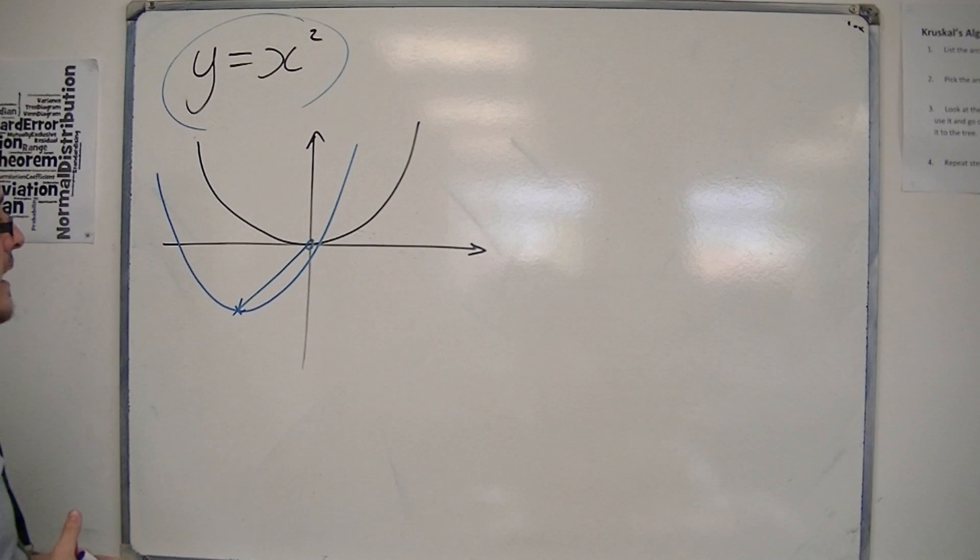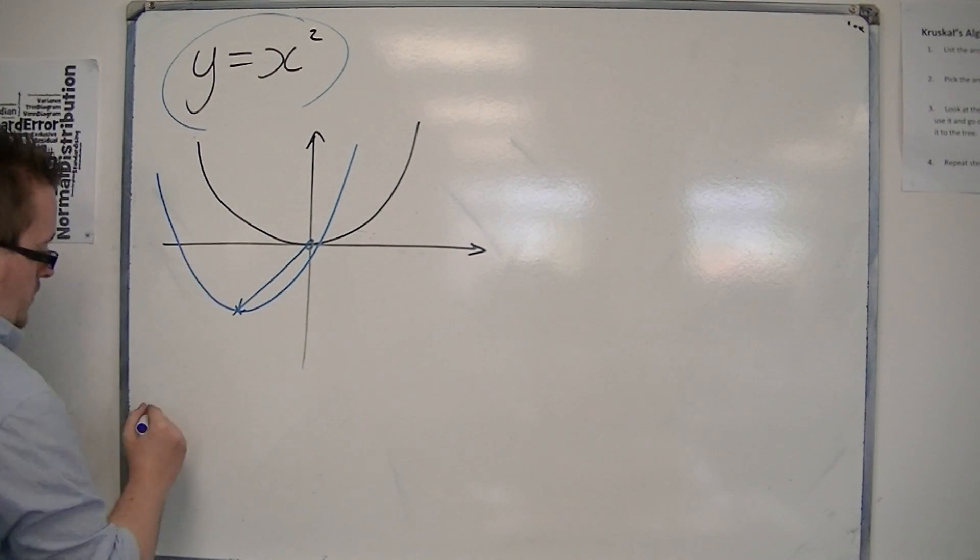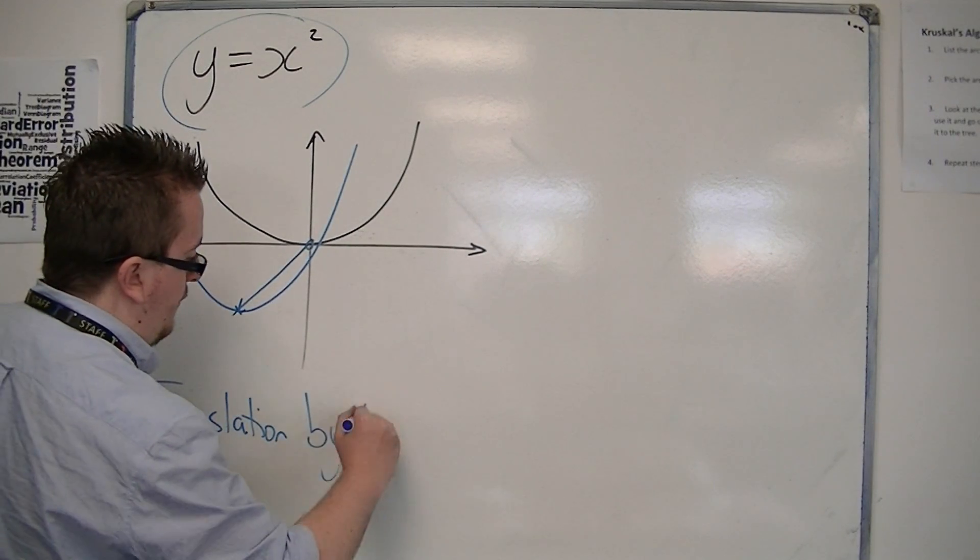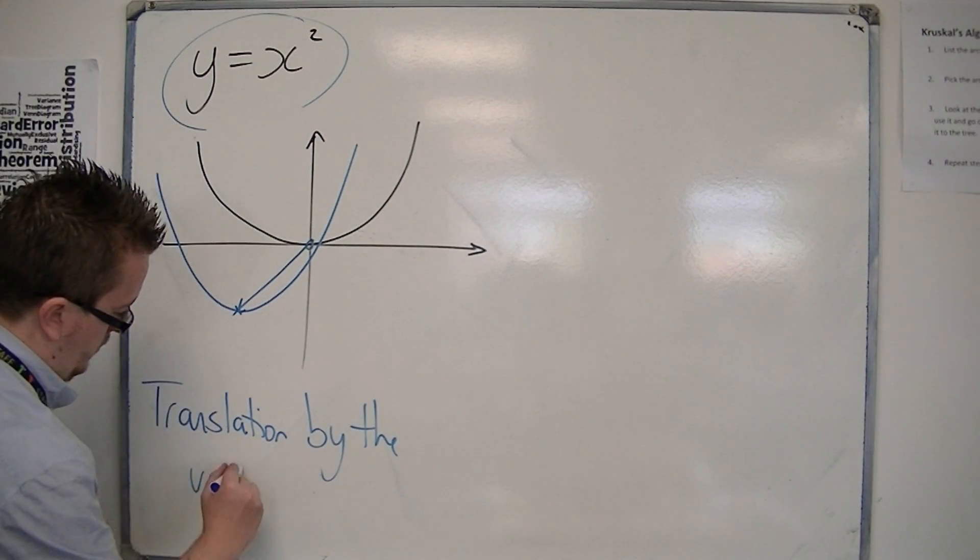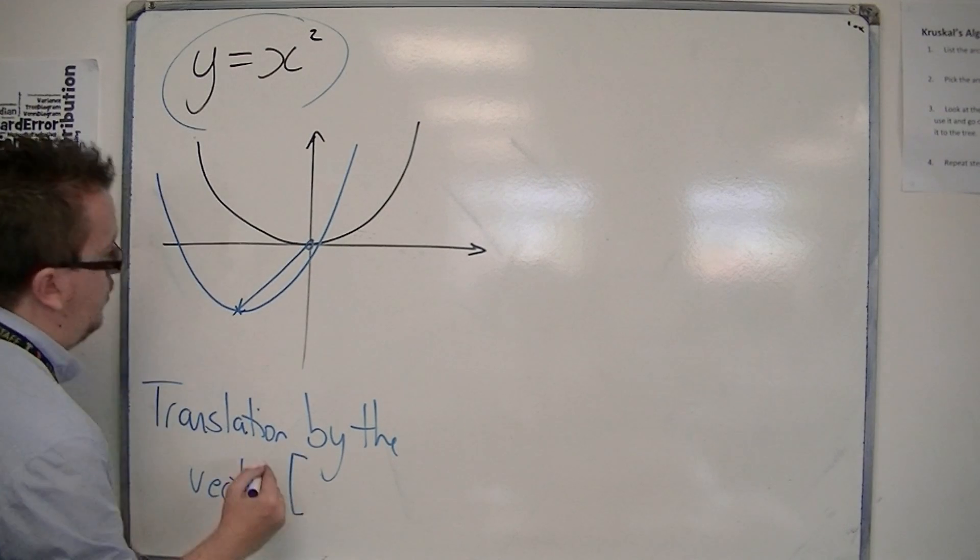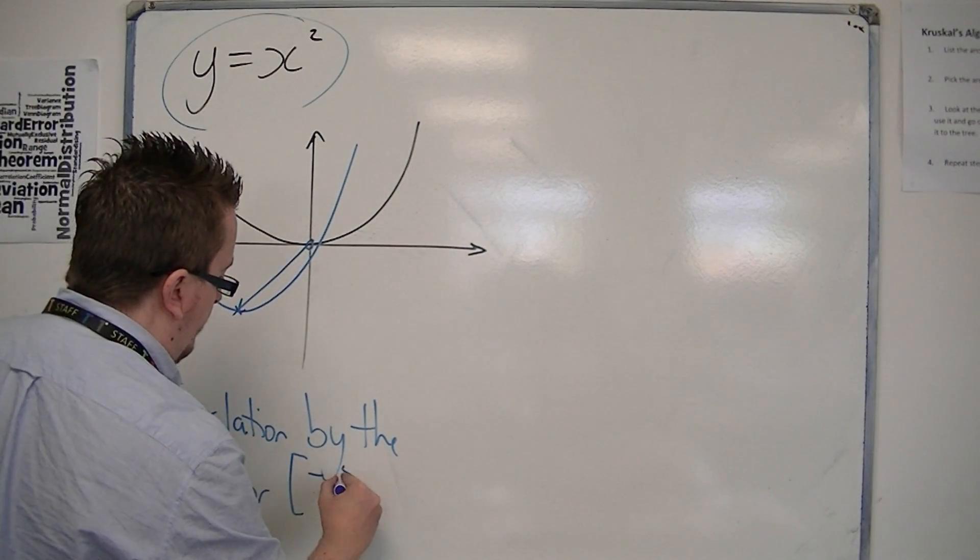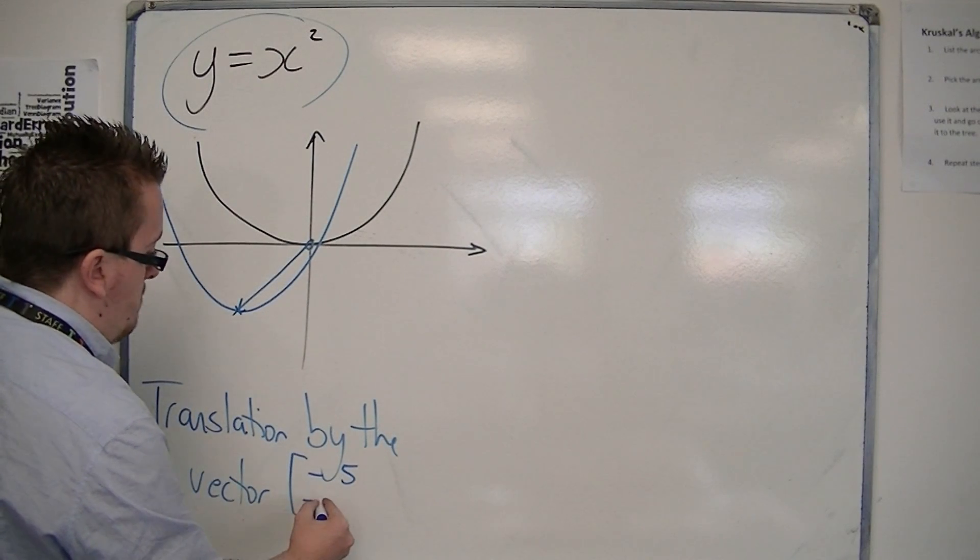So let's say I've now done a translation by the vector where it's gone this way. So let's say it's minus 5, minus 7.